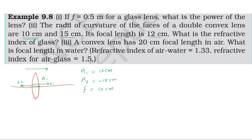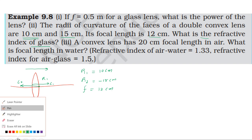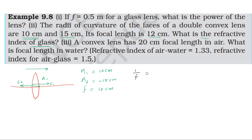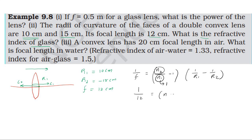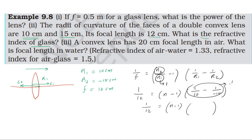We need to find the refractive index of the glass. Using the lens maker's equation: 1/f equals (n_glass / n_medium minus 1) multiplied by (1/R1 minus 1/R2). Substituting: 1/12 equals (n minus 1) into (1/10 minus 1/(-15)), which gives (n minus 1) into (1/10 plus 1/15).